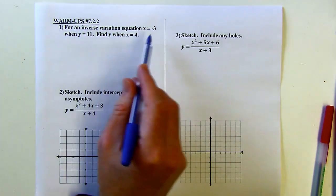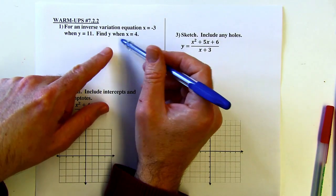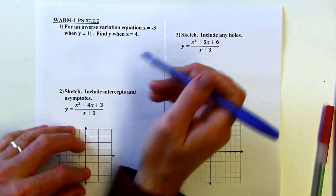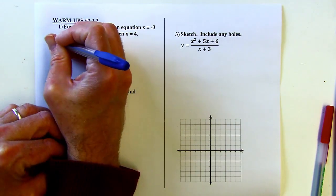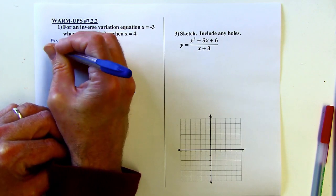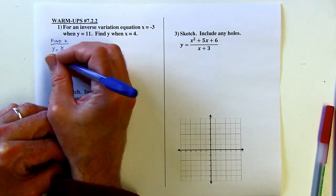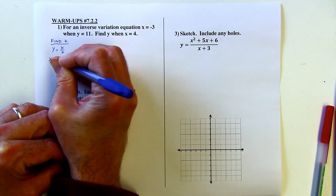Okay, we've got inverse variation. I've got an ordered pair here, and then I'm looking for y when x equals 4. So first thing I'm going to do is find k. The inverse variation equation is y equals k over x. So if I rewrite that, multiply both sides by x, x times y equals k.